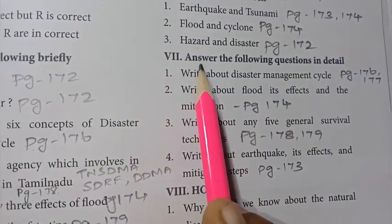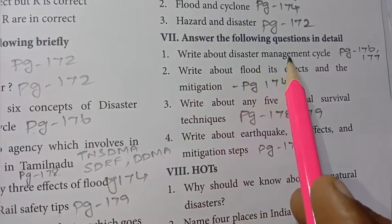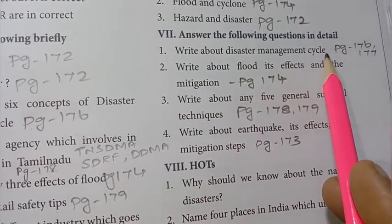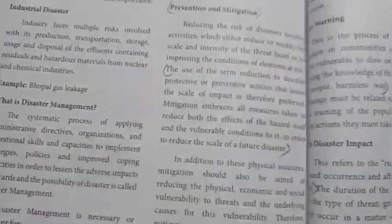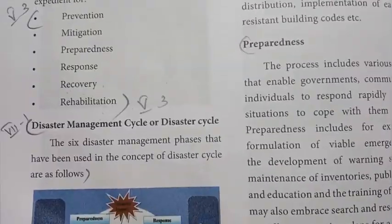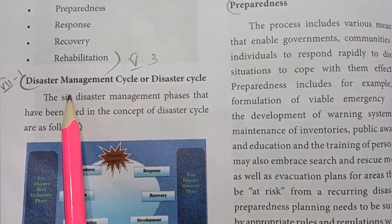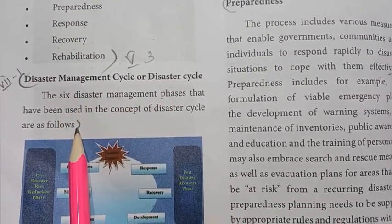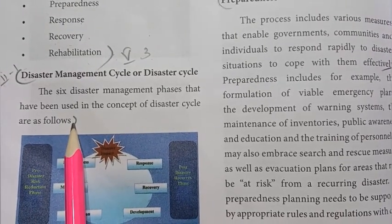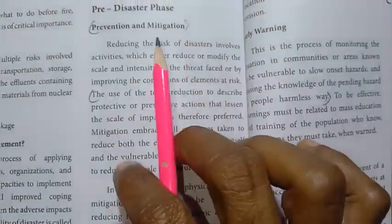Section VII, answer the following questions in detail. First: write about the disaster management cycle. Refer to pages 176 and 177. Begin with the disaster management cycle or disaster cycle — introduce in three lines.